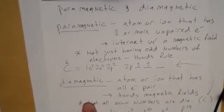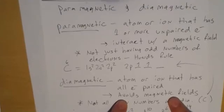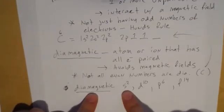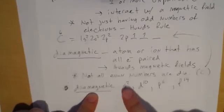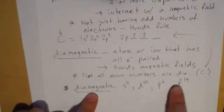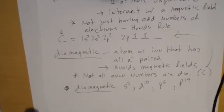Diamagnetic is an atom or ion that has all electrons paired. And these kinds of elements avoid magnetic fields. Just having an even number does not mean you're diamagnetic. Actually, diamagnetic is very restricted. Any atom that ends with s2 or ends with d10 (not an exception), or ends with p6, or ends with f14—so it's a very, very small group compared to the overall periodic table.